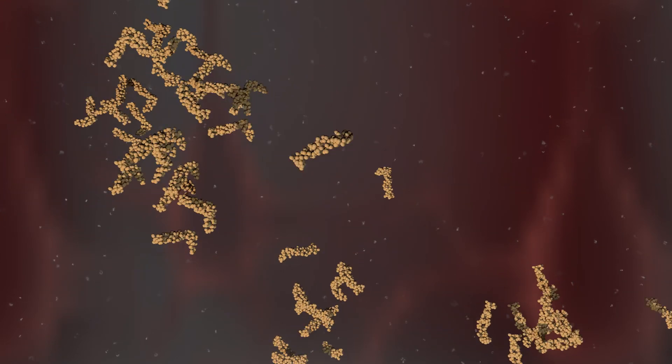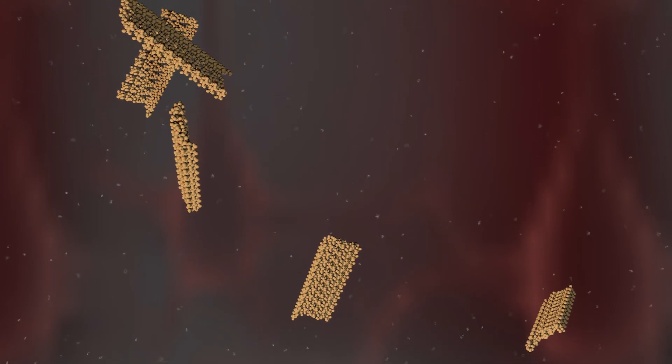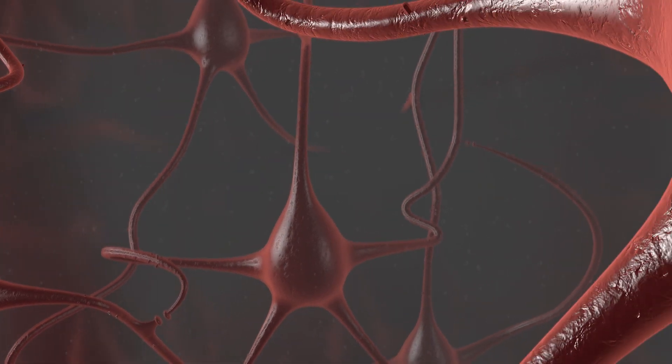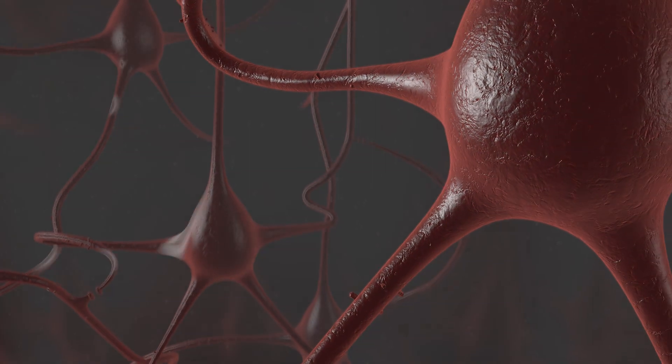Beta-amyloid clumps together into plaques, and when there are enough of them, they disrupt the neuron's ability to send messages. If cells can't communicate, the brain's ability to function diminishes.